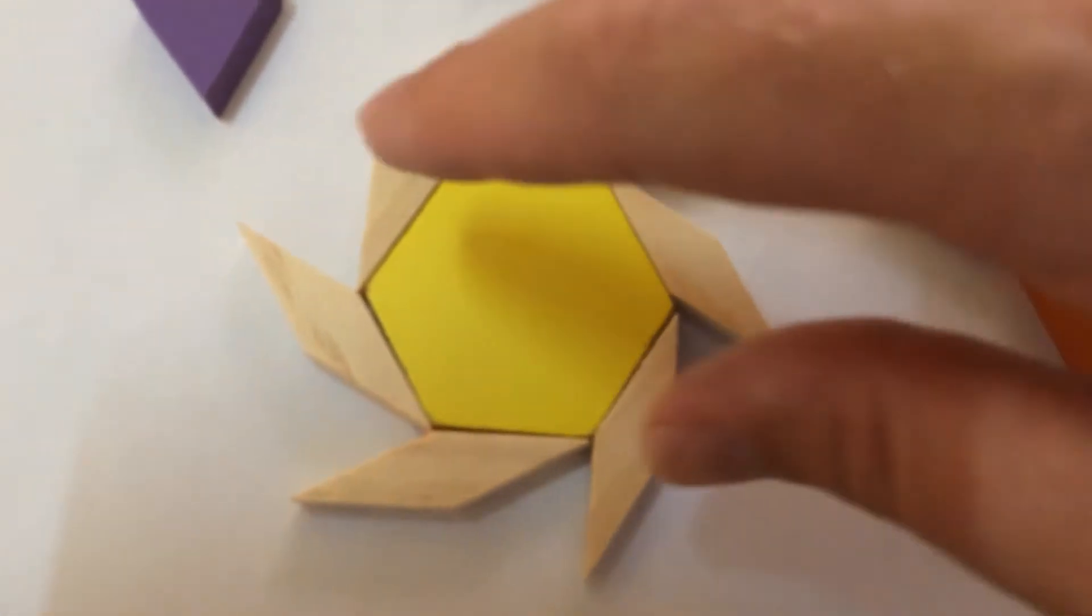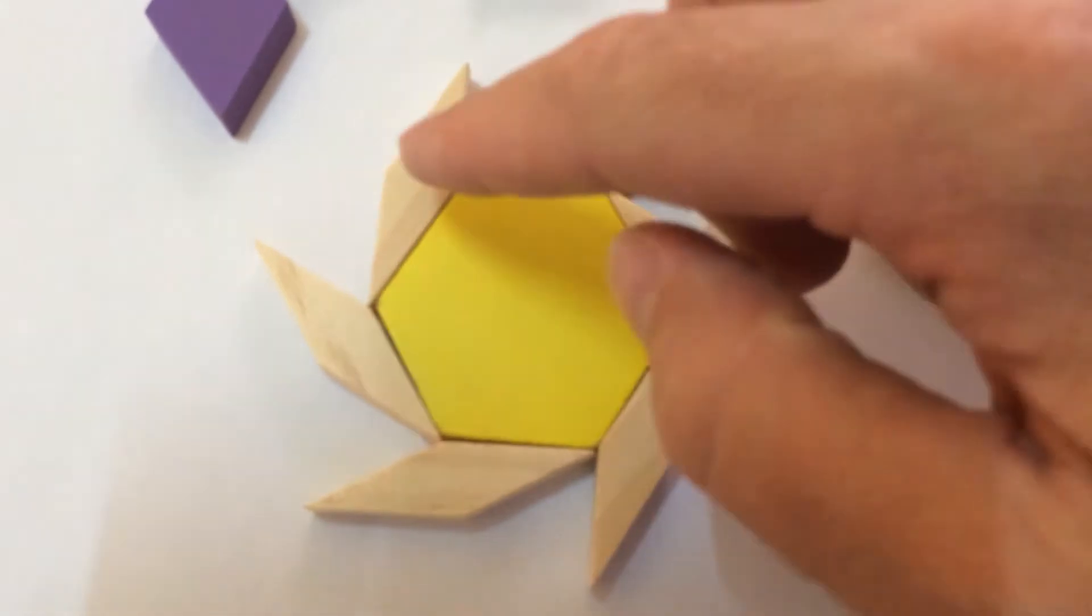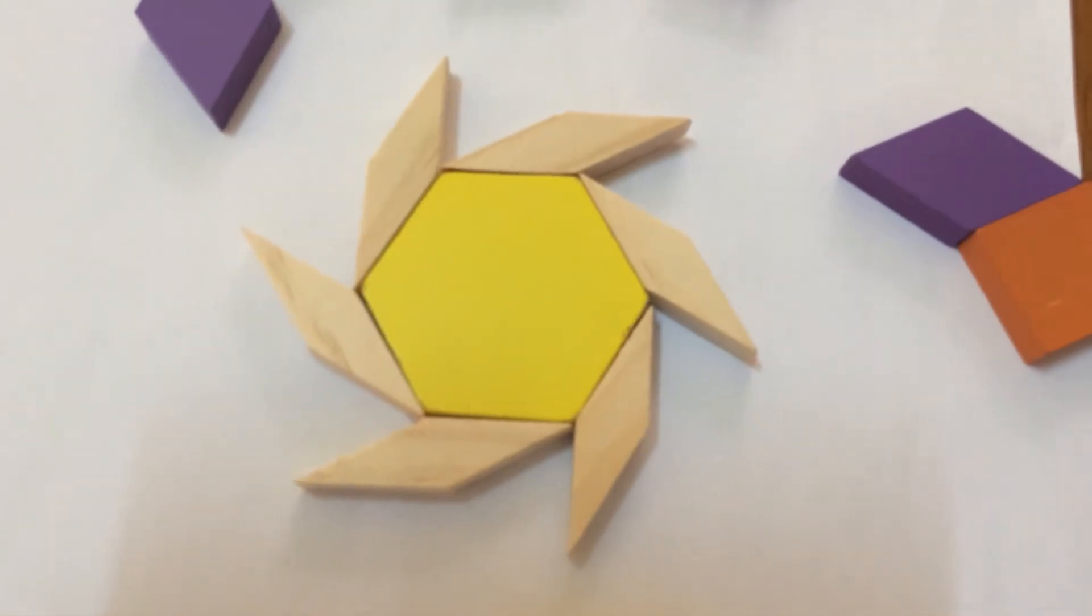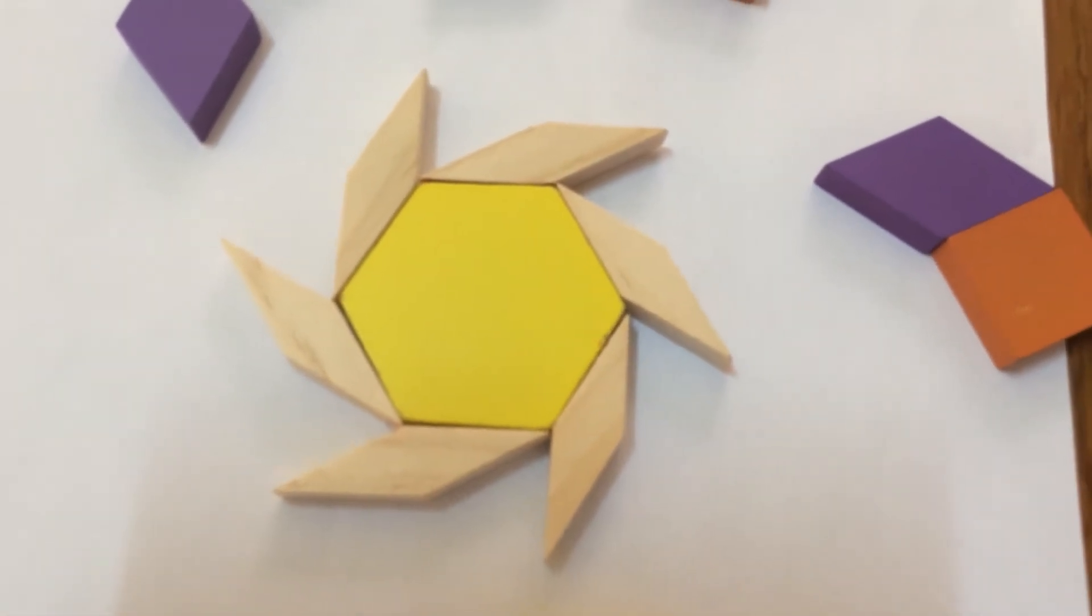Or rotational symmetry, where one, two, three, four, five, six sides. It's got order of six—rotational order of six.